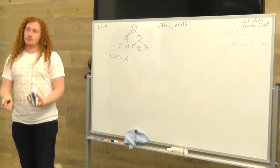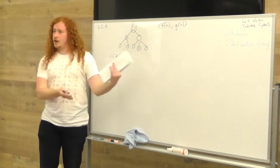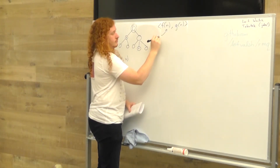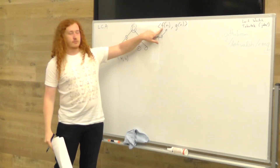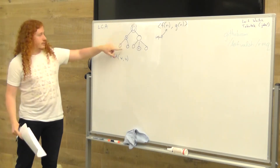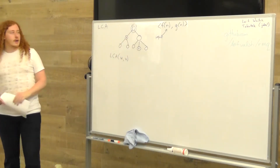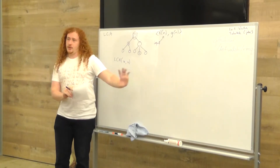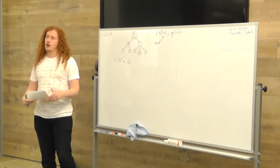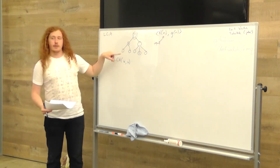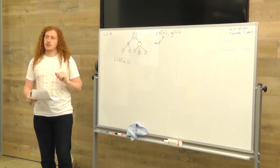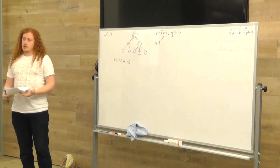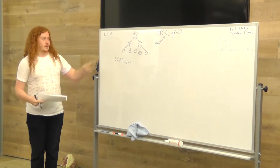Big O notation is how we analyze algorithms. When you want to talk about how fast something runs, you talk about big O notation. The formalism comes from calculus, but basically what you need to know is: if you have an input of size N, the running time is going to be some function of N. We talk about things that are order N, or linear time algorithms, which means you're going to process everything roughly once. We talk about things that are constant time — operations that don't depend on the size of the problem.